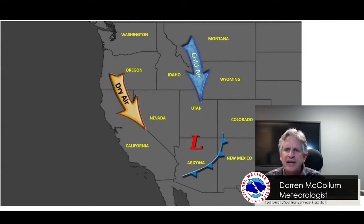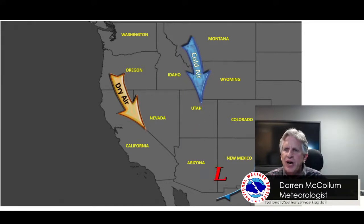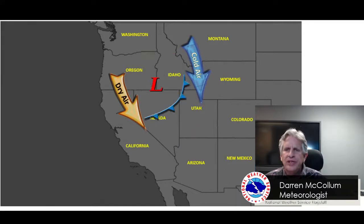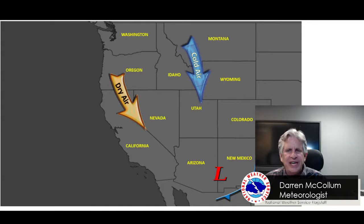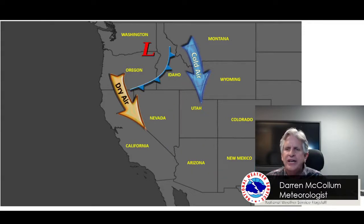More significant with this pattern is the cold air that moves in and produces dry, cold northeasterly winds for a day or days. And I think we're all familiar with those — they happen a few times each winter.